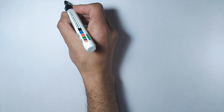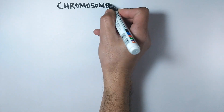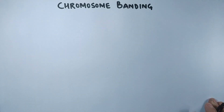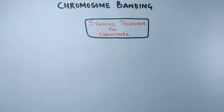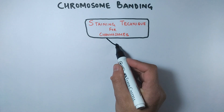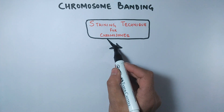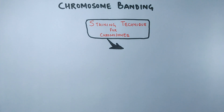In this video we will be discussing chromosome banding. It is a staining technique for chromosomes. Just like we stain cells and their components in order to visualize cell components under a microscope, in the same way we can stain chromosomes in order to visualize the different regions of a chromosome.